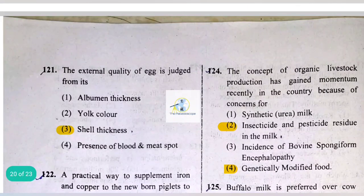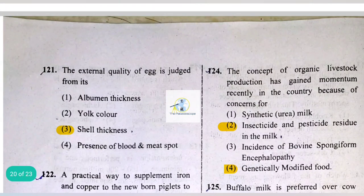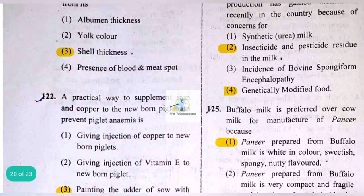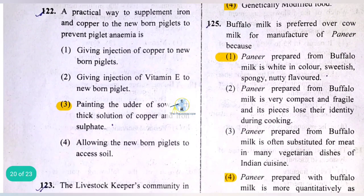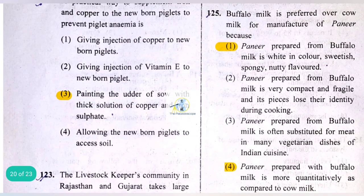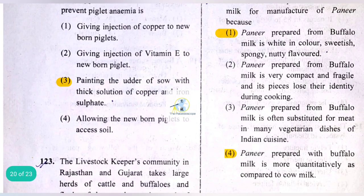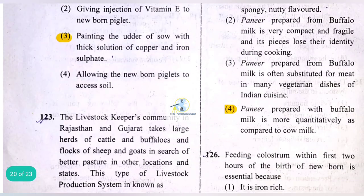The concept of organic livestock production has gained momentum recently due to concerns for insecticide and pesticide residues in milk or genetically modified food. Buffalo milk is preferred over cow milk for manufacture of paneer because paneer prepared from buffalo milk is white in color, has a spongy and nutty flavor, and is more in quantity compared to cow milk.